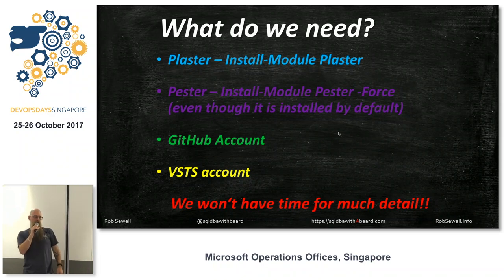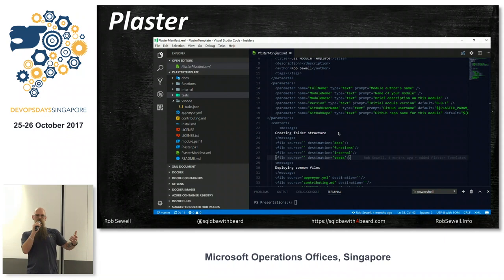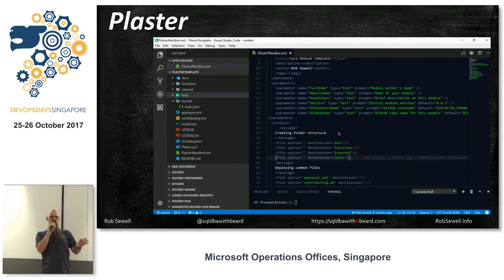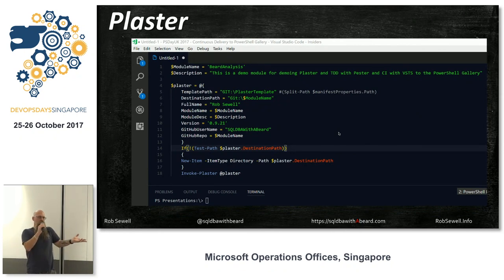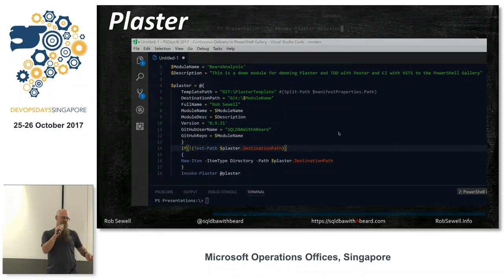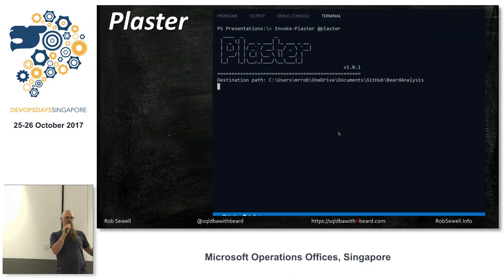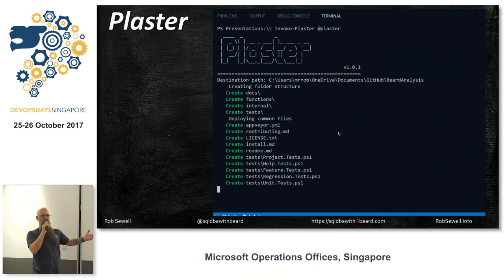Plaster enables us to template a framework for our modules — we can build our folders, our files, add parameters. The magic happens in the manifest file; everything you want to define goes in there. Then you create a template, call it with Invoke-Plaster, splat out the parameters or answer some prompts. And it looks just like this — creating folders, creating files, without answering any prompts because all parameters were given dynamically ahead of time.